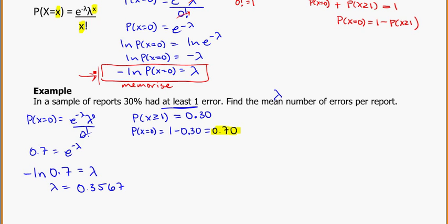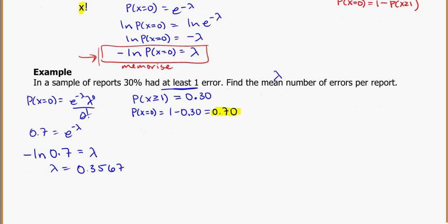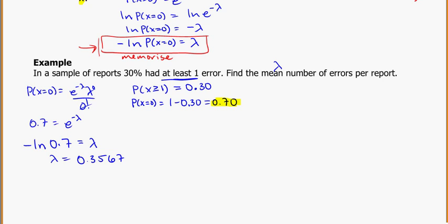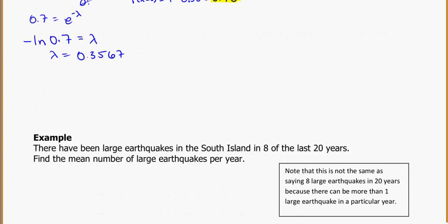So again you can use this directly. Once you know P(x=0), just plug it in. Minus ln of that number is going to be equal to the lambda that you've got. And once you know lambda, you can go on to solve any of the other problems that they might ask about it.